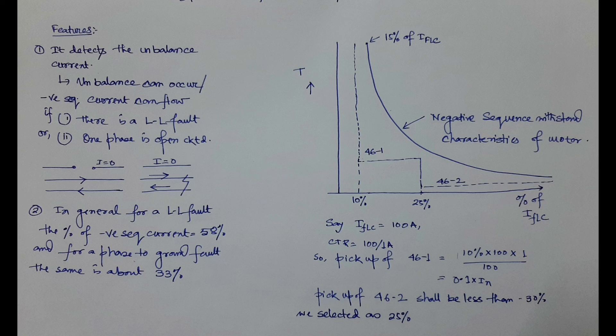I have used a two-element negative sequence relay here. The first element is 46-1 and the second is 46-2. The purpose of two elements is that 46-1 is used for alarm and 46-2 is used for tripping. You can also use both elements for tripping, or use a single element, or choose either definite time or inverse time characteristics. We will explain the system using definite time characteristics.